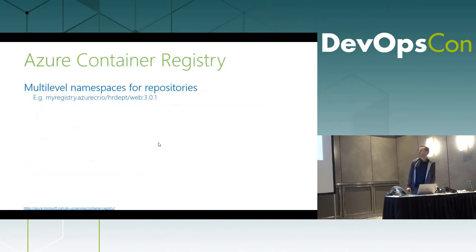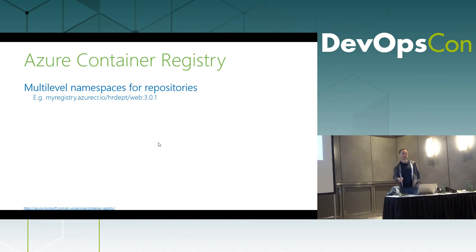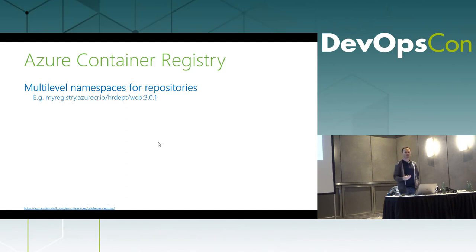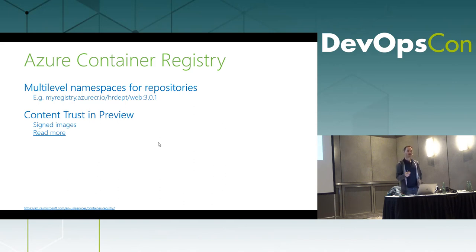Repositories are structured in a multi-level namespace way. You see your registry name, then the namespace, then the repository, then the tag — so you can store multiple versions of an image. You can have as many registries as you want; you don't pay for the registries, only for storage and CPU used in ACR. Content Trust, meaning signed images, is also supported, but this feature is currently in preview. If you exchange images with partners or suppliers, you can sign images and recipients can verify the signature.